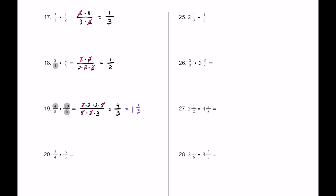For number 20, let's set up one long fraction bar and identify composite numbers. 6 and 4 are both composite; 3 stays the same. 6 breaks into 2 times 3, and 4 breaks into 2 times 2, while 5 stays on the bottom. A 2 on top and a 2 on bottom cancel out. On top we have 3 times 3, which is 9, and on bottom 2 times 5 is 10, so 9 tenths is our final answer.